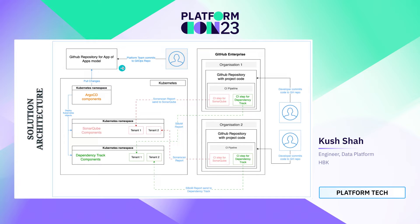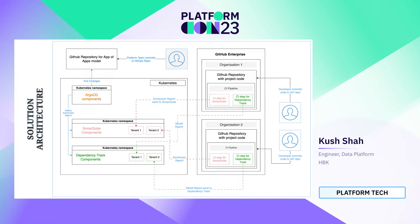Let me give you a brief about the solution architecture. The platform engineering team is responsible for maintaining a GitHub repository containing infrastructure-as-code and ArgoCD-based manifest files. Platform engineers first set up Kubernetes, deploy ArgoCD components on Kubernetes, and add manifest files for SonarQube and Dependency Track in the GitHub repository. The GitHub repository is considered the desired state, while the Kubernetes cluster is the actual state, and it's ArgoCD's job to sync them. ArgoCD then automatically deploys SonarQube and Dependency Track on Kubernetes based on those manifest files, using a pull-based mechanism.